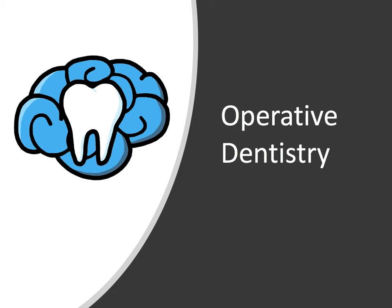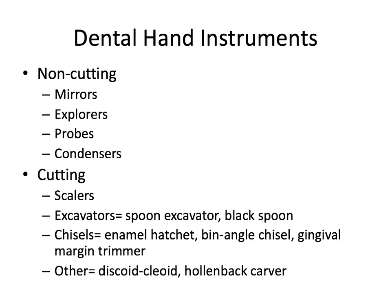Hey everyone, Ryan here and welcome back to our operative dentistry series. In this video we'll cover everything from hand instruments to handpieces and burrs used in operative dentistry. So put on your seatbelts and let's get to it. The two main categories of dental hand instruments are non-cutting and cutting instruments — the ones most commonly used and that'll come up on the board exam. In the second half of the video we'll talk about handpieces.